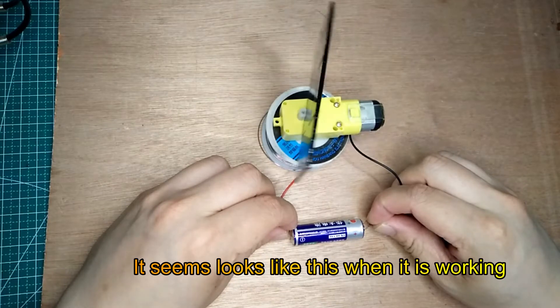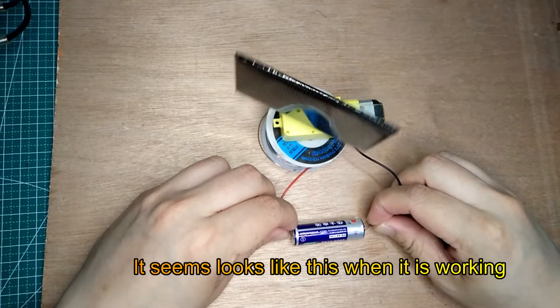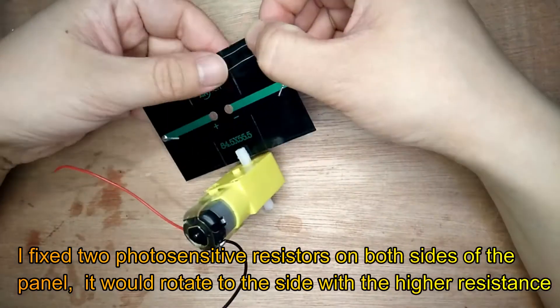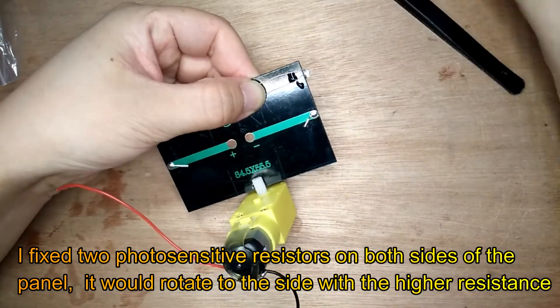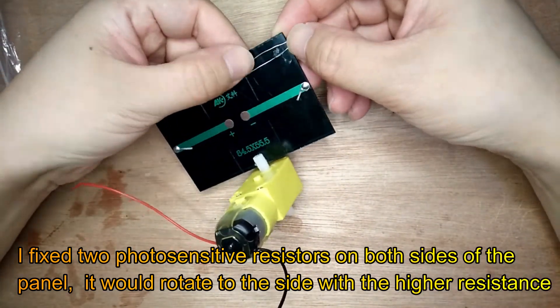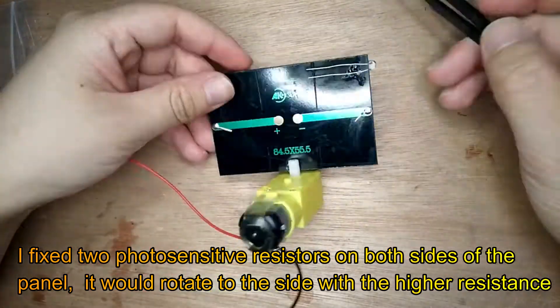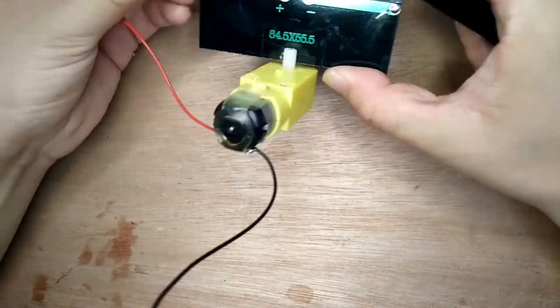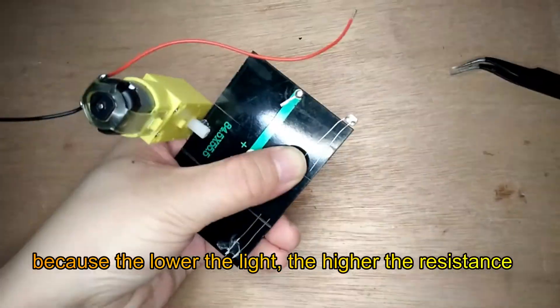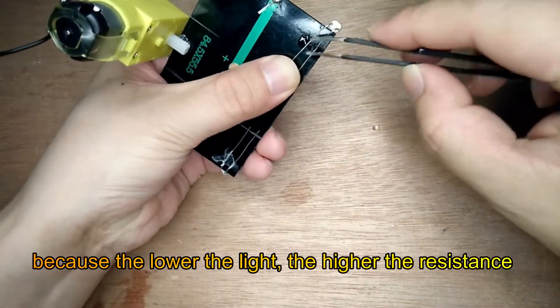It seems to look like this when it is working. I fixed the two photosensitive resistors on both sides of the panel. It would rotate to the side with higher resistance, because the lower the light, the higher the resistance.